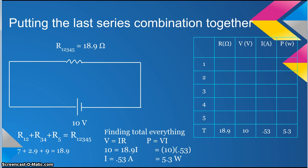Now that we solve for the total current, you now have enough numbers to solve for the total power by using P equals VI. Plug your numbers in and P equals 5.3.